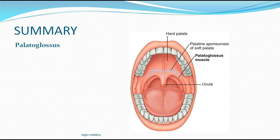In summary: palatoglossus is located in the palatoglossal fold. Its origin is from the oral surface of the palatine aponeurosis. It inserts into the lateral border of the tongue at the junction between the anterior two-thirds and posterior one-third — also called the sulcus terminalis. Its action is to elevate the tongue upwards and backwards, closing the oropharyngeal isthmus and preventing food from returning to the oral cavity. Nerve supply: 11th cranial nerve, the accessory nerve.